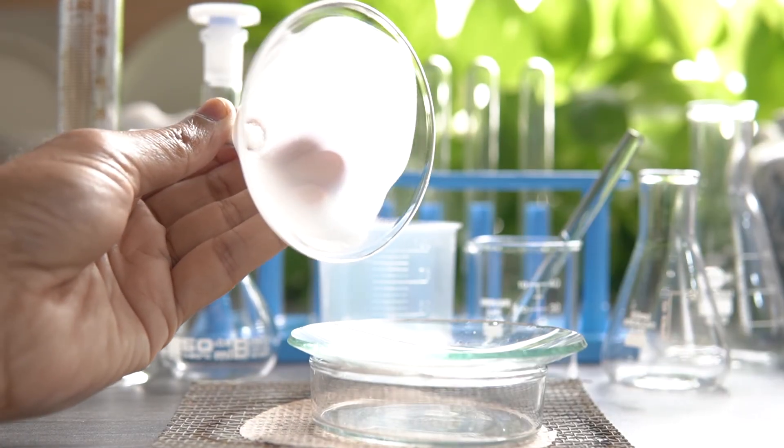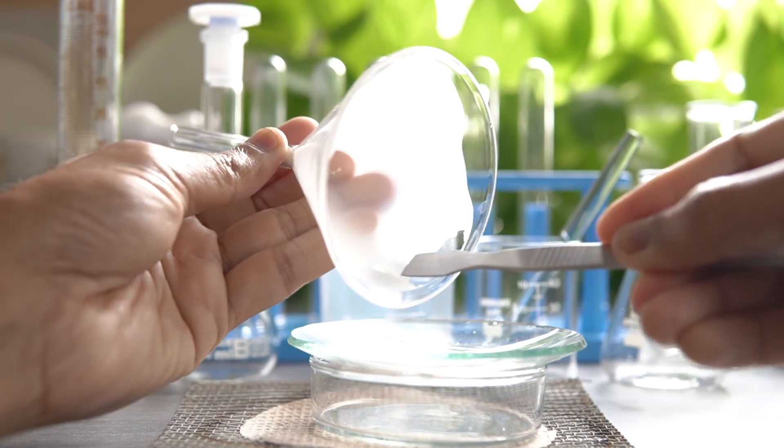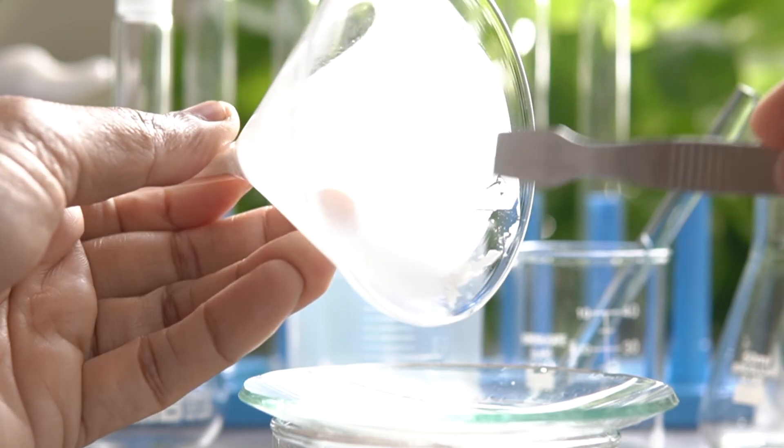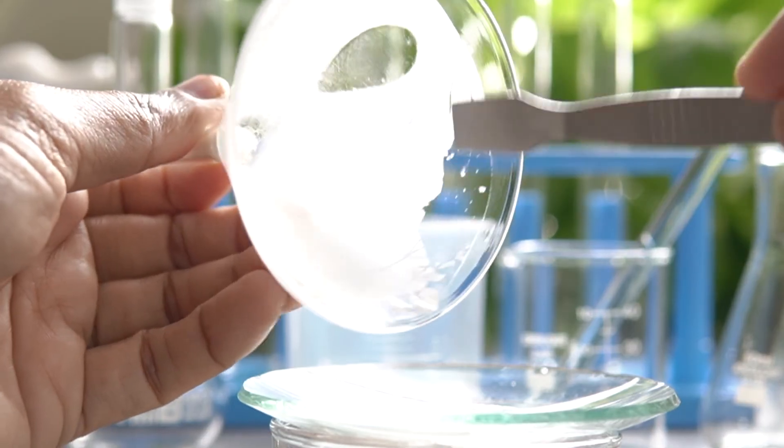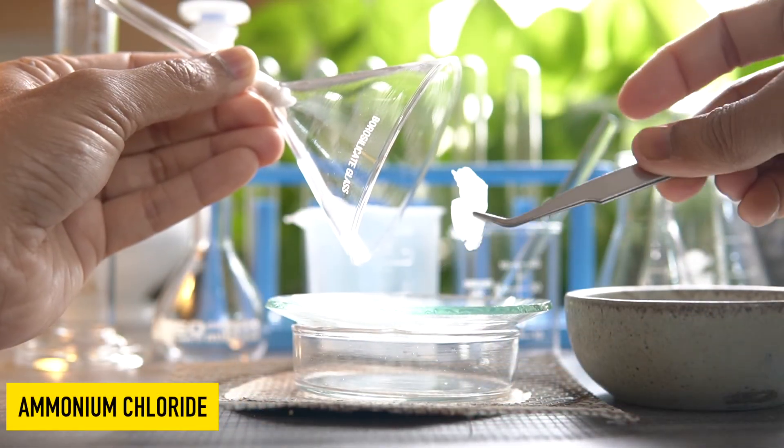We can easily collect the solid ammonium chloride from the inner surface of the glass funnel using a scraper. By using this technique, we can easily separate a mixture if one of the components sublimes.